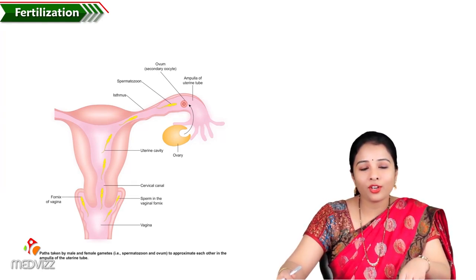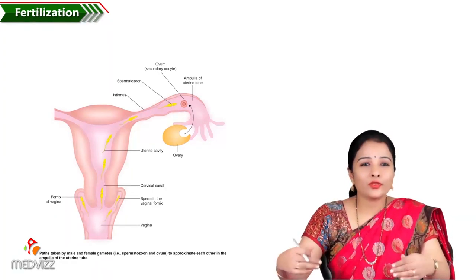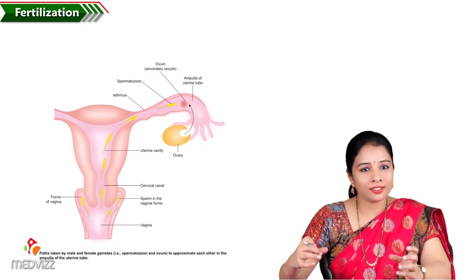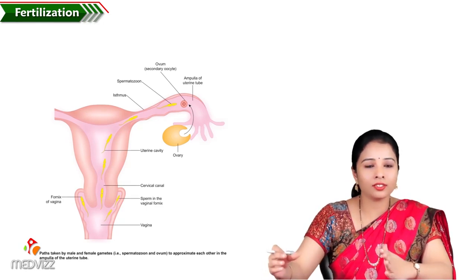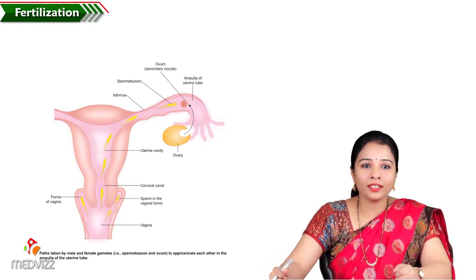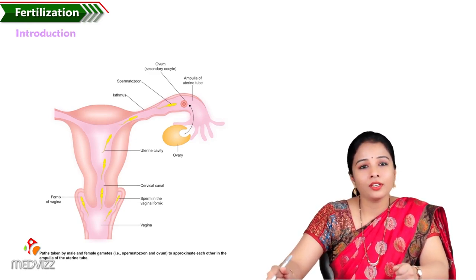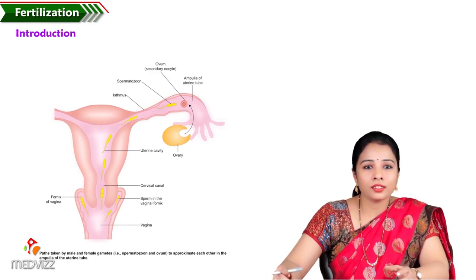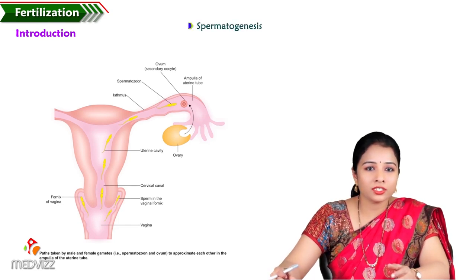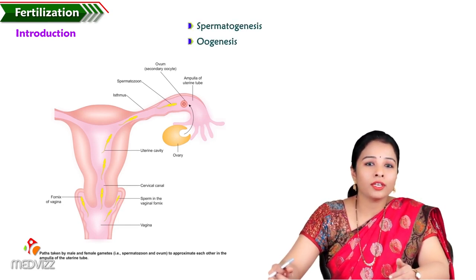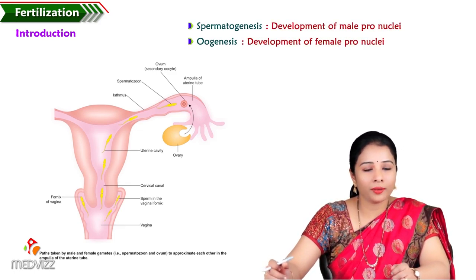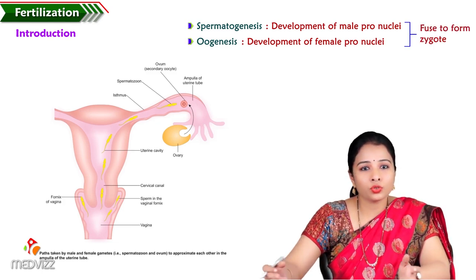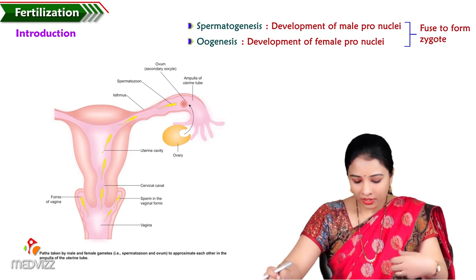Dear students, welcome back to embryology classes. The embryology classes are continuous sessions, so it is good to know them continuously as a whole part — then only we will have a better idea about every topic. In previous sessions we completed spermatogenesis and oogenesis, where we saw the development of female pronuclei and male pronuclei, which fused together to form the zygote. So today's topic is fertilization.